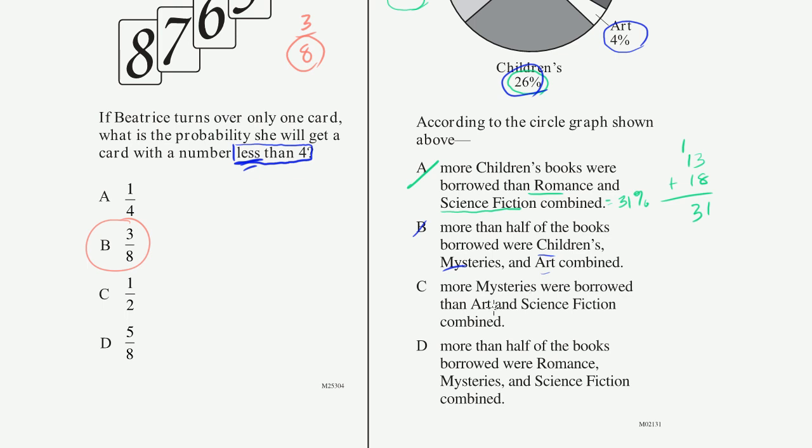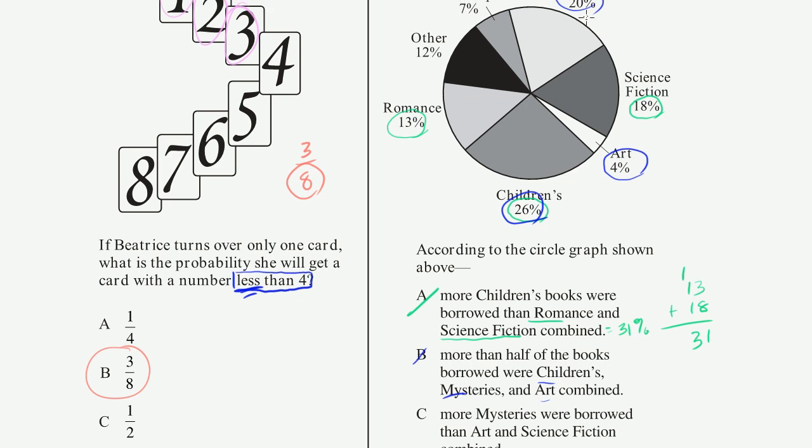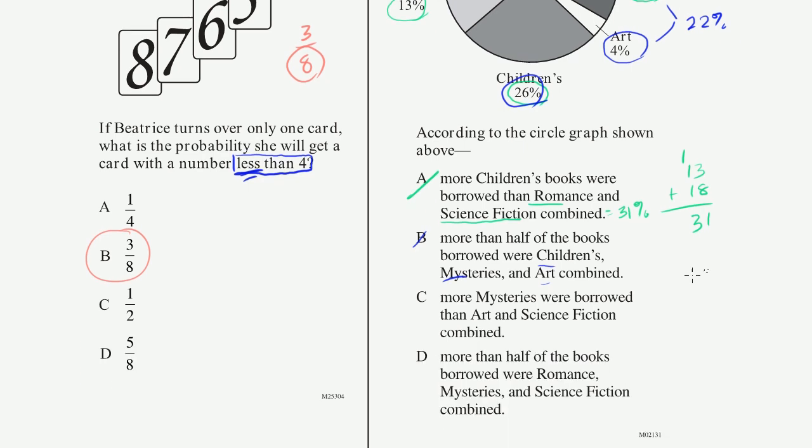C, more mysteries were borrowed than art and science fiction combined. Let's see, mysteries was 20%. And then art and science fiction combined is 4 plus 18. If you combine these two, you get 4 plus 18 is 22%. So the mysteries are definitely not more than the art and science fiction combined. So that's not the correct answer.